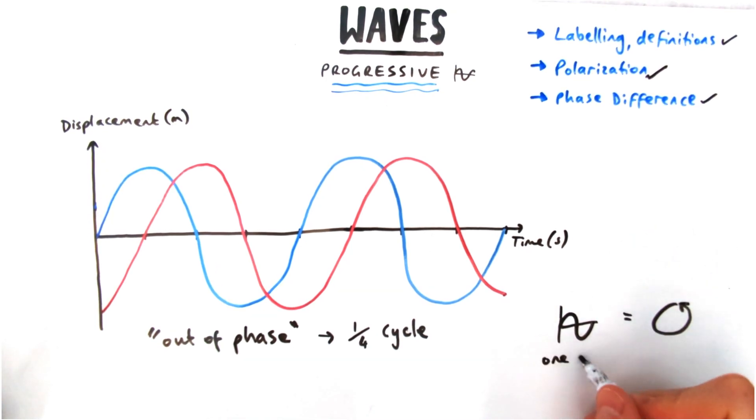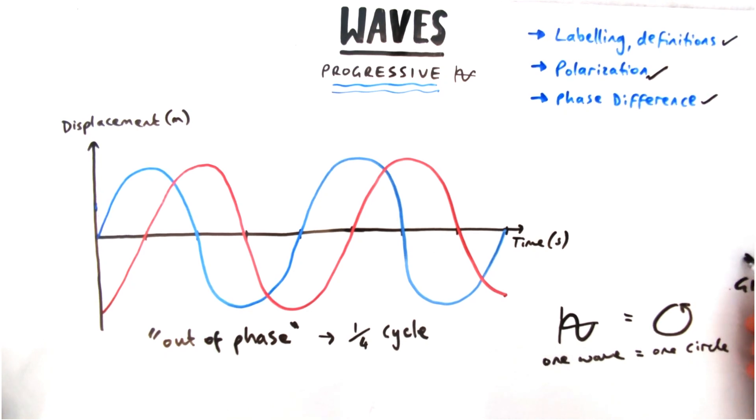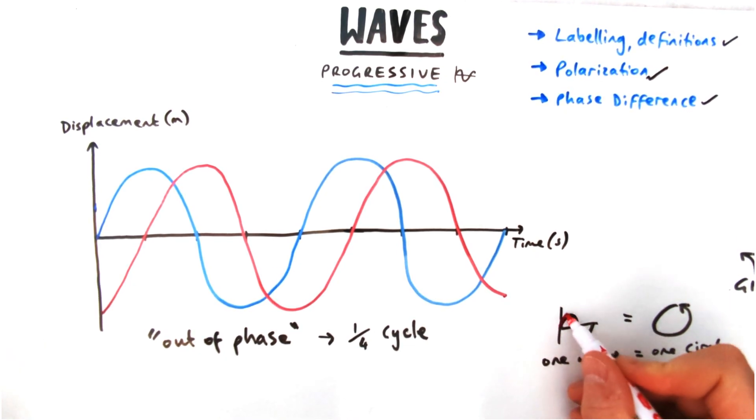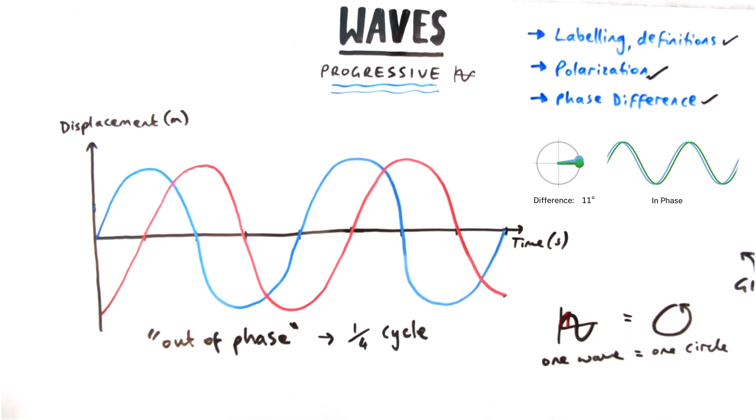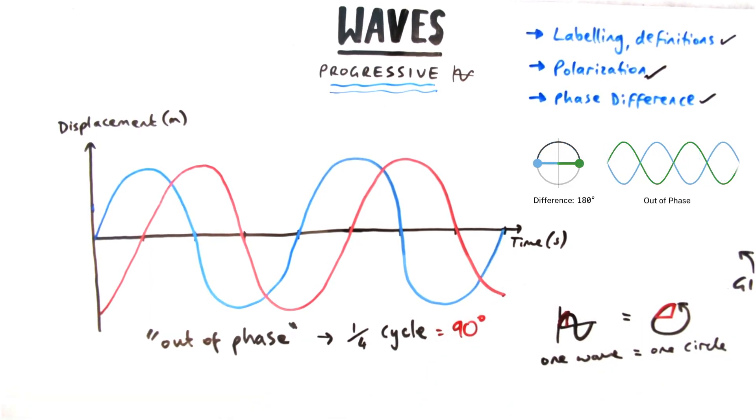When we talk about phase difference, we need to compare waves to circles. Here's a really helpful gif that can help explain it. When we talk about phase difference, we're going to consider a wave to be one circle. So instead of saying a quarter of a cycle, we say a quarter of a circle in degrees, which is 90.